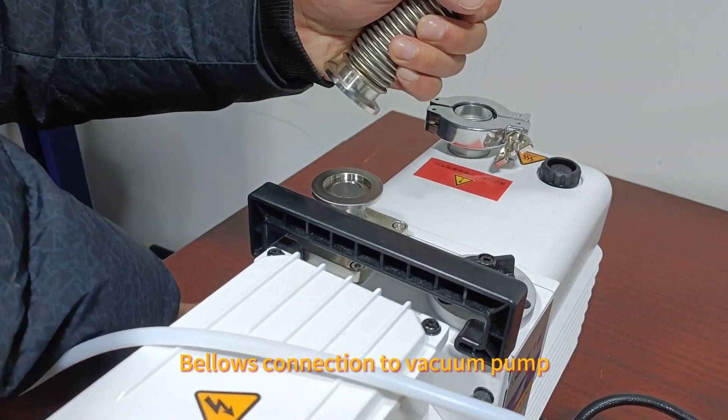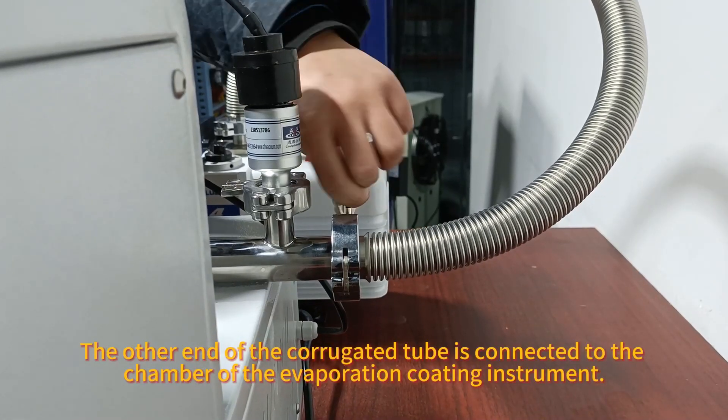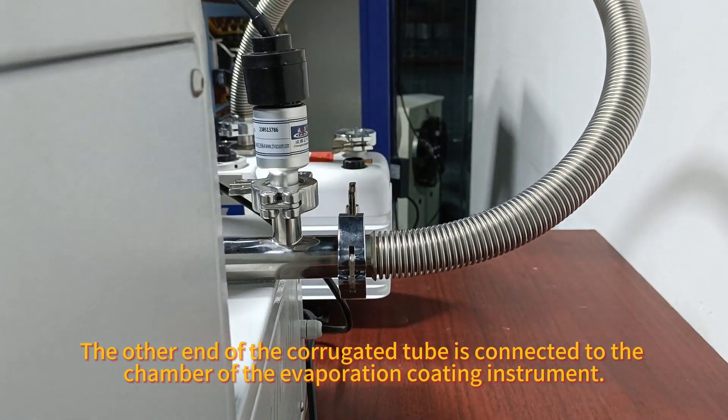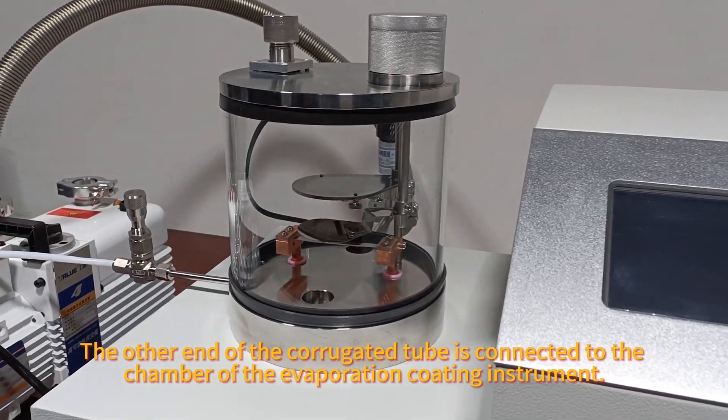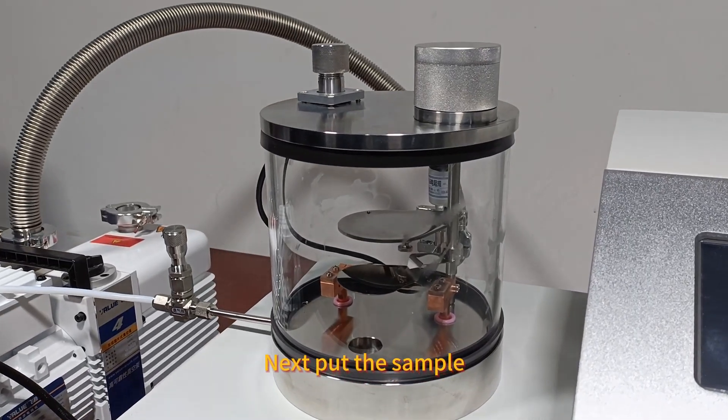Connect the bellows to the vacuum pump. The other end of the corrugated tube is connected to the chamber of the evaporation coating instrument.